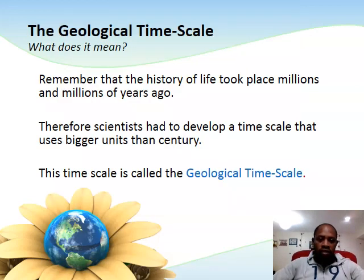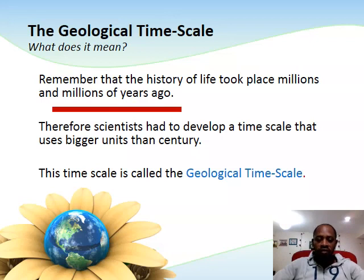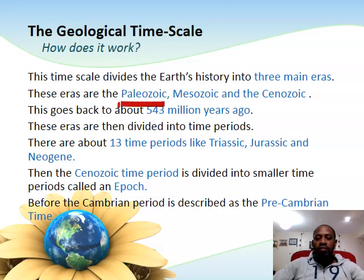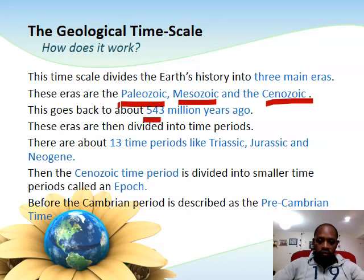To summarize: the geological time scale is about the history of life taking place millions of years ago. Scientists have divided all these periods into sub-units — Aeons, Eras, Periods, and Epochs. The three main Eras we will focus on are the Paleozoic Era, the Mesozoic Era, and the Cenozoic Era. All of this goes back about 543 million years ago. These Eras are divided into about 13 time periods, including the Triassic where dinosaurs started appearing, the Jurassic where birds also appeared, and the Neogene.